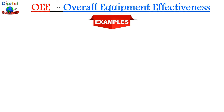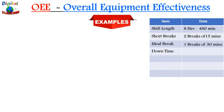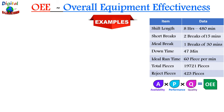Let's take an example. Assume a shift length of 8 hours, equivalent to 480 minutes. We have 2 short breaks of 15 minutes each, so total short break time is 30 minutes. We have 1 meal break of 30 minutes, and a downtime of 47 minutes. Ideal cycle time is 1 piece per second (60 pieces per minute). Total pieces produced: 19,271. Rejection pieces: 423. We need to calculate the OEE score using availability, performance, and quality.